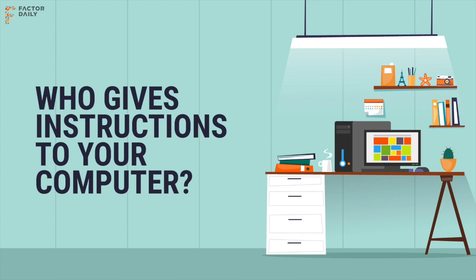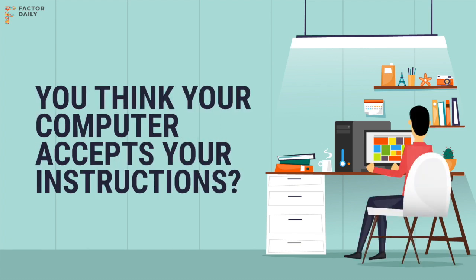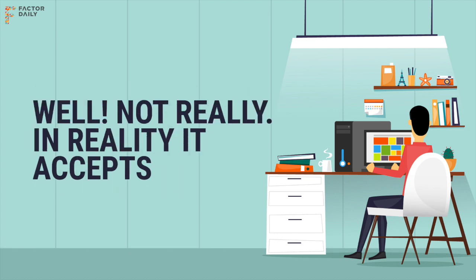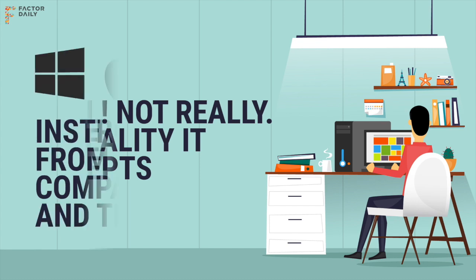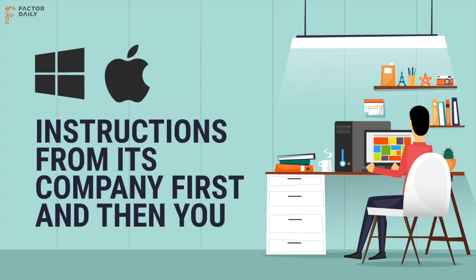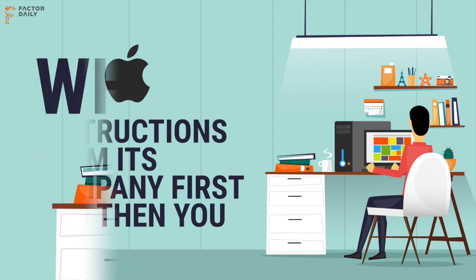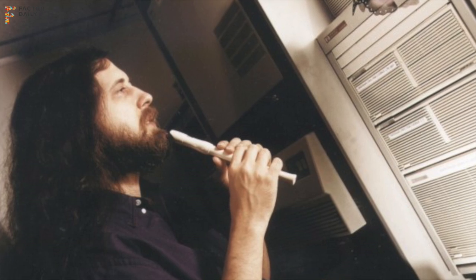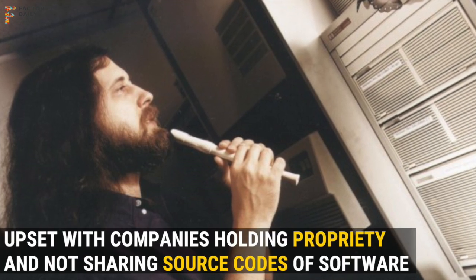So who gives the instructions to your computer? You might think it's obeying your instructions, when really it's obeying somebody else first, and you only as much as that company wants it to will let it listen to you. With software there are two possibilities: either the users control the program, or the program controls the users.